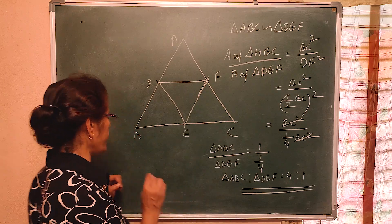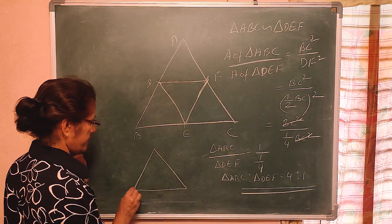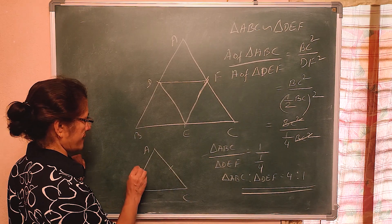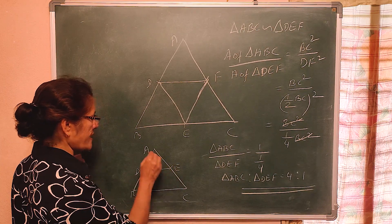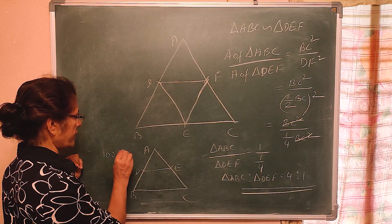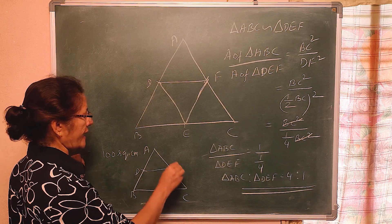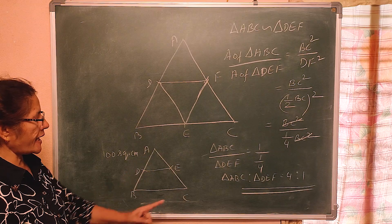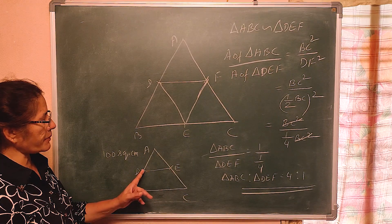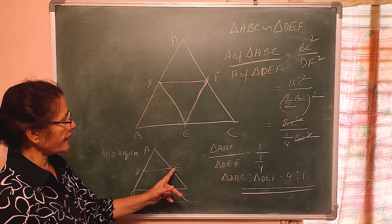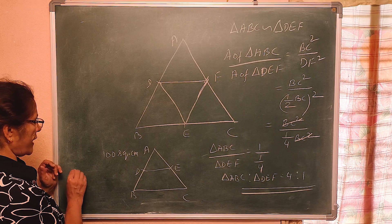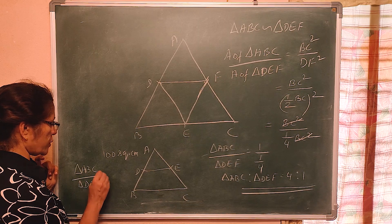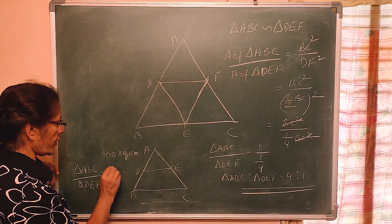Now I ask one more question. In triangle ABC, D is the midpoint of AB and E is the midpoint of BC. If the area of triangle ABC is 100 square units, what is the area of triangle ADE? Using the same logic: area of triangle ABC divided by area of triangle ADE equals AB² divided by AD².